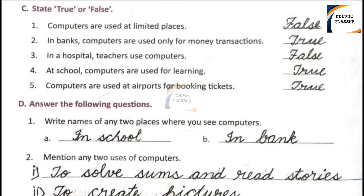Question C: State true or false. If our sentence is right, we write true. If our sentence is wrong, we write false. Number 1: Computers are used at limited places. This statement is wrong, so we write False.